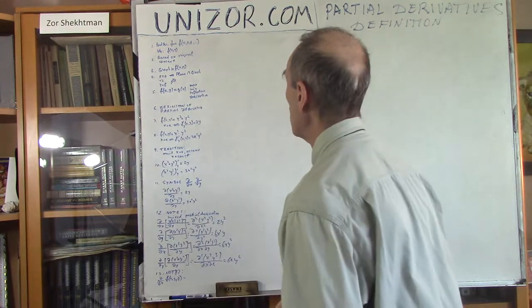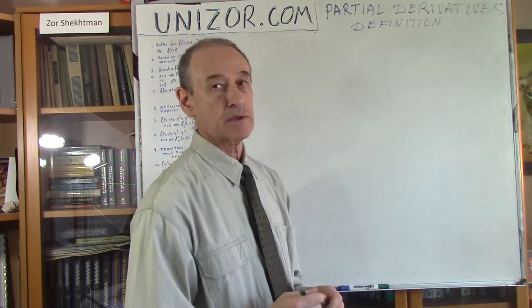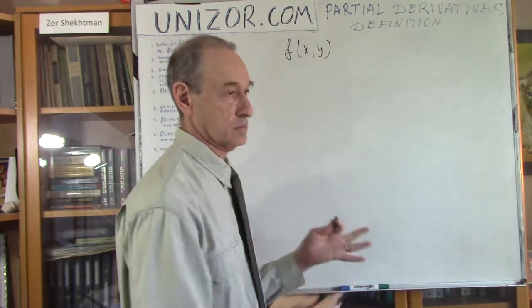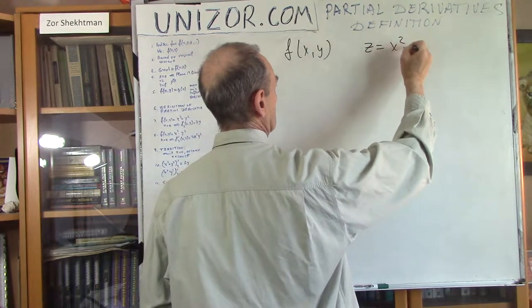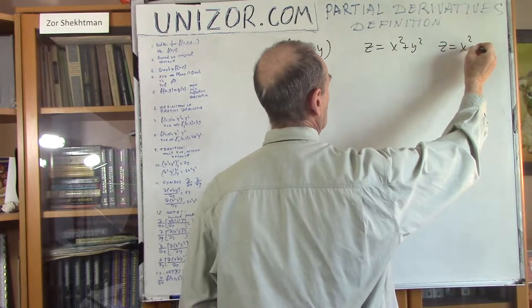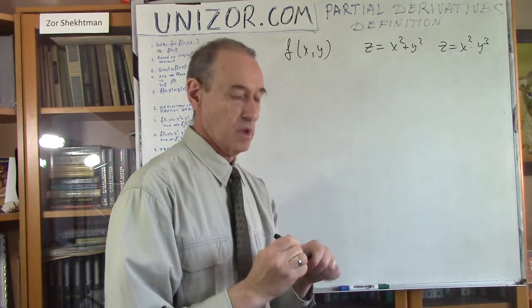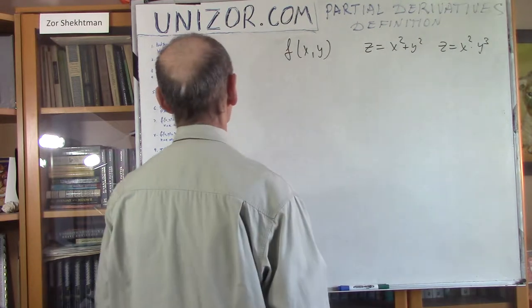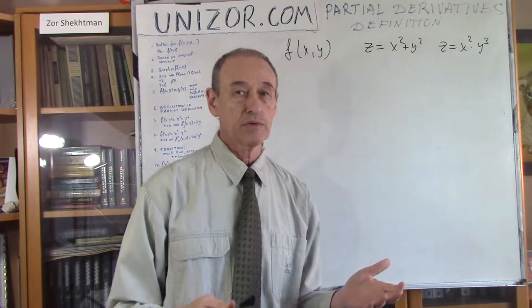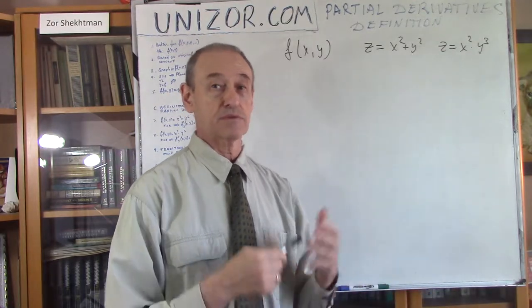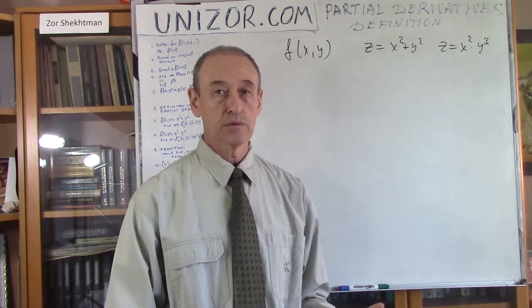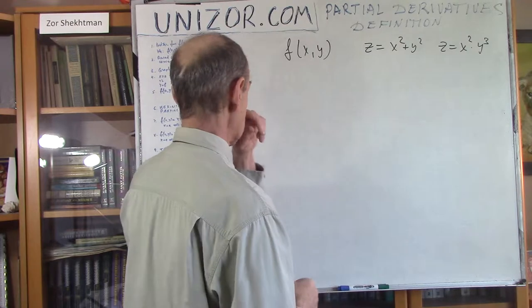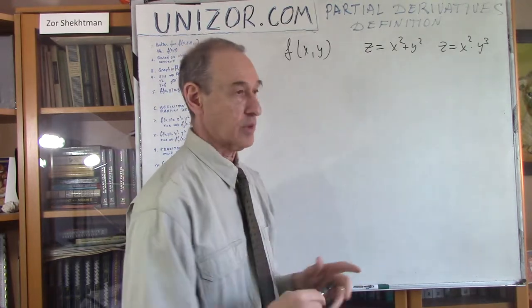So, partial derivative. We will consider only functions of two arguments. I assume that everything about regular derivatives you already know; if not, go to the corresponding lecture of the course. Now, how can a function of two arguments be represented graphically? For a function of one argument, we need a coordinate plane and it's basically some kind of a curve. For a function of two arguments, we're talking about a three-dimensional representation — some kind of a surface.